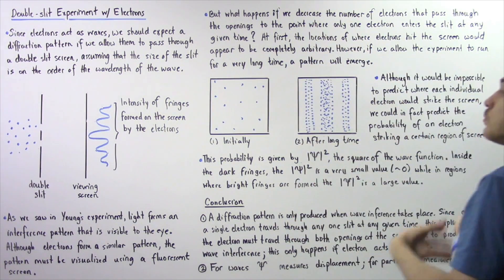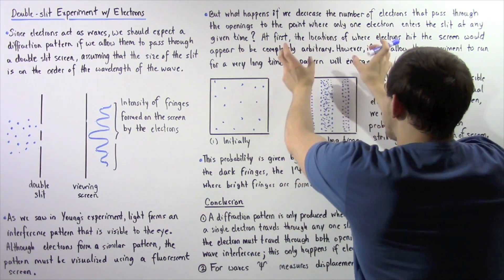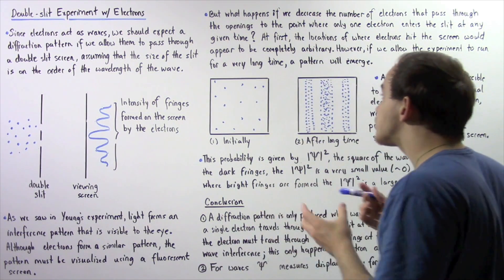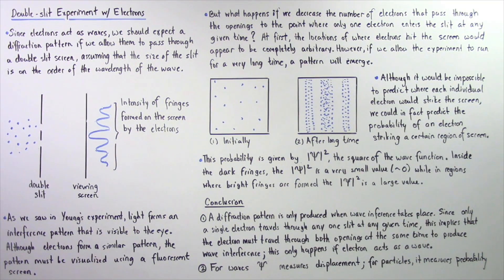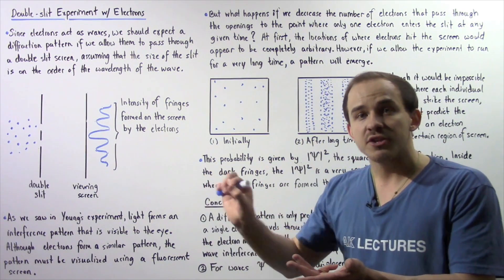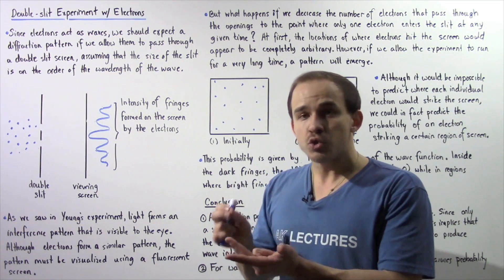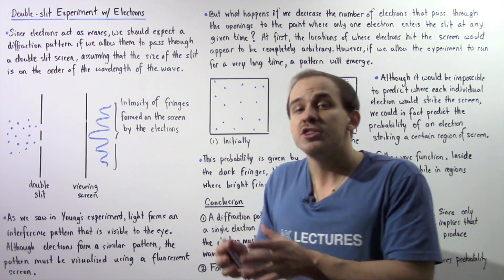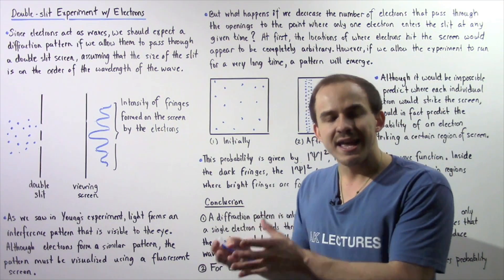In diagram 2, we have the center fringe — the brightest fringe — then two more fringes on either side, with blank regions in between representing dark fringes where destructive interference takes place. Although it would be impossible to predict where each individual electron strikes the screen, we can predict the probability of an electron striking a certain region of the screen. Even though it's impossible to follow the pathway of any single electron, it is possible to predict the probability of an electron hitting a certain region.